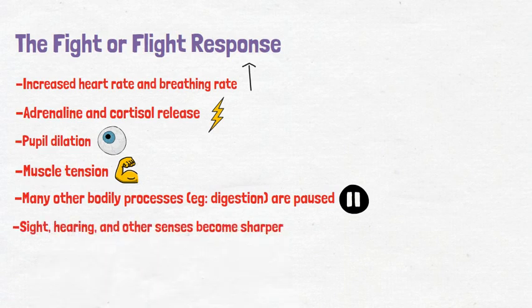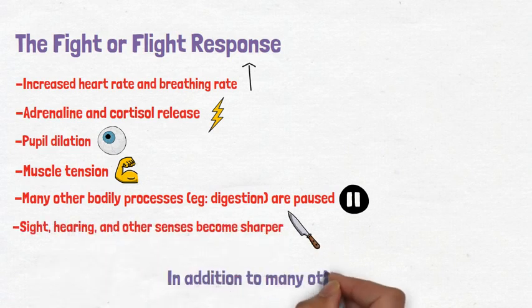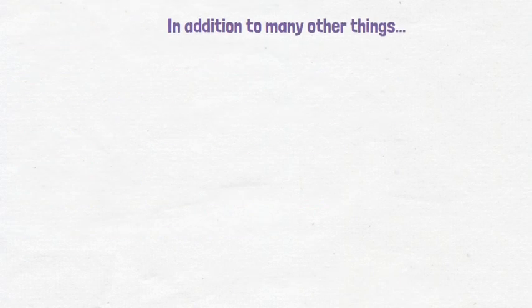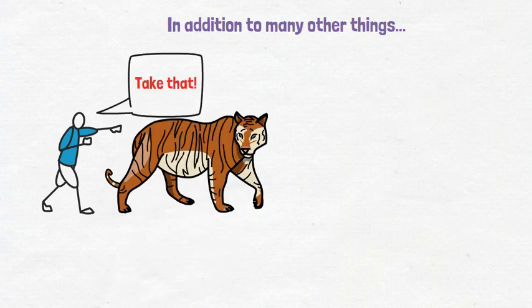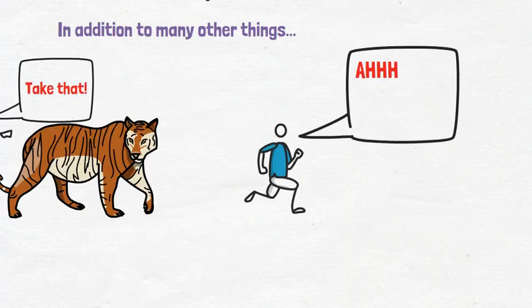Sight, hearing, and your other senses become sharper, in addition to many other things, to best prepare the individual to either fight this threat—so in the case of vicious predators, this would be to attack—or to flee the situation, aka to run the hell away.